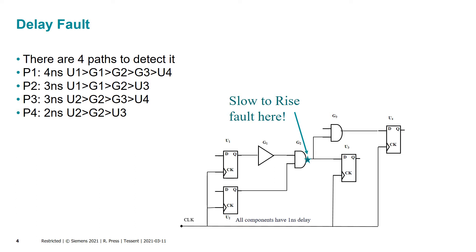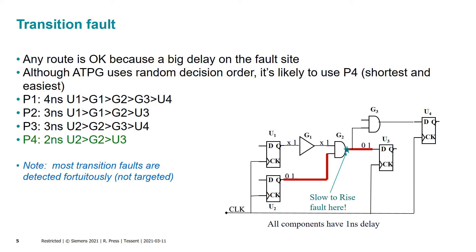Let's look at a simple example where there are a few paths, and I'm targeting a fault — a slow to rise — at the output of an AND gate. For transition fault, since any path is okay for catching a gross delay, the tool finds an easy path to propagate, in this case path P4. Note that when creating transition patterns, beyond what we target, all sorts of other activity is happening in the circuit, and we're capturing at all the scan cells. So we get fortuitous detection — transitions captured throughout the circuit — and we take full credit for that detection with the transition pattern, removing those faults from the default list.